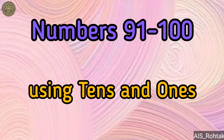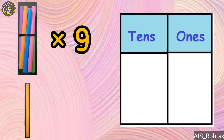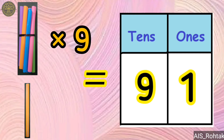Now we will make numbers from 91 to 100 using the same method. Nine bundles and one loose stick makes the number 91 — nine under the tens column and one under the ones column.